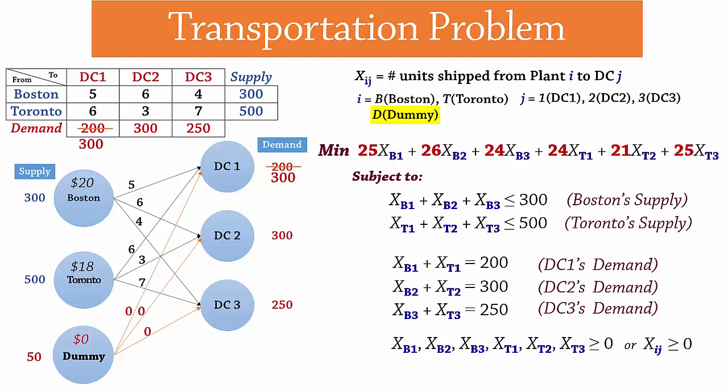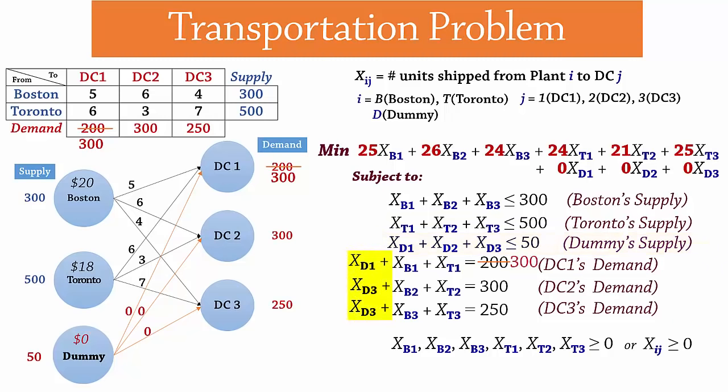We can thus modify our model as follows. Add D for dummy in the decision variables. Add the new cost to the objective function. They won't really have an impact on total cost. Next, we add a constraint for the dummy node. And then add the units assumed to be shipped from the dummy to the distribution centers. And again, XIJ is non-negative for all I and J.